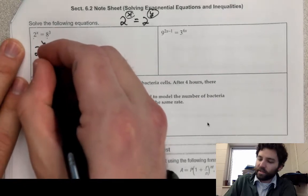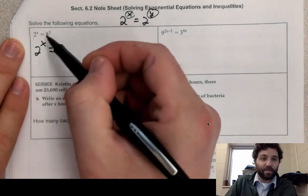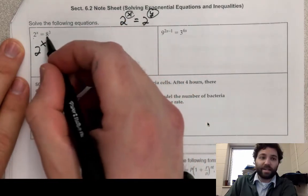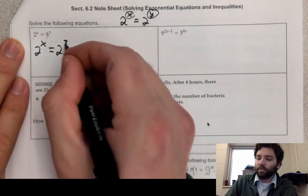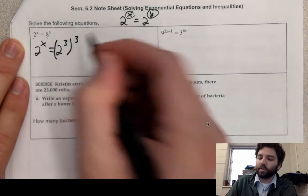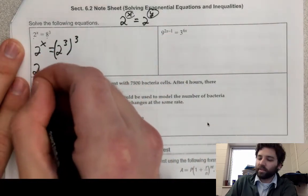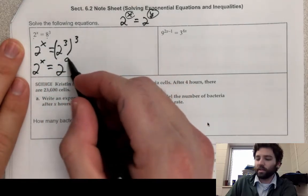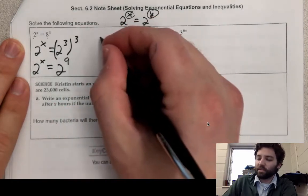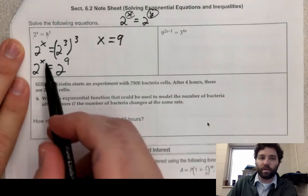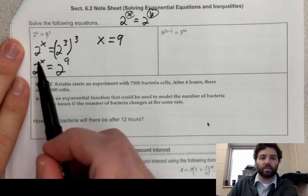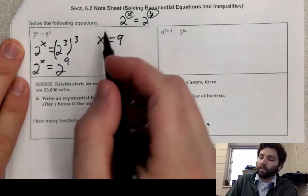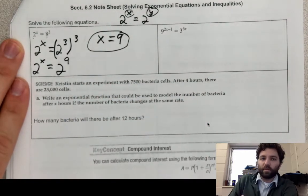The left-hand side is 2 to the x — that doesn't change. But if I can write 8 as a power with base 2, I can solve this. 8 is 2 to the third, and that whole expression is to the third power, so I get 2 to the x on the left and — power to a power, we multiply — 2 to the 9 on the right. So x equals 9. Sometimes you'll need to solve a further equation, like if it were 4x equals 9.